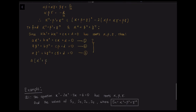Now we add these three equations together, which gives: a(α³+β³+γ³) + b(α²+β²+γ²) + c(α+β+γ) + 3d = 0, and hence we can deduce α³+β³+γ³.